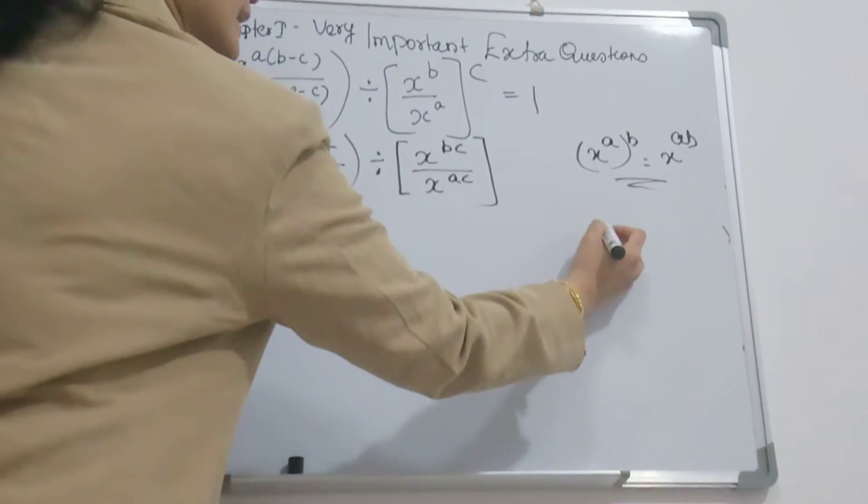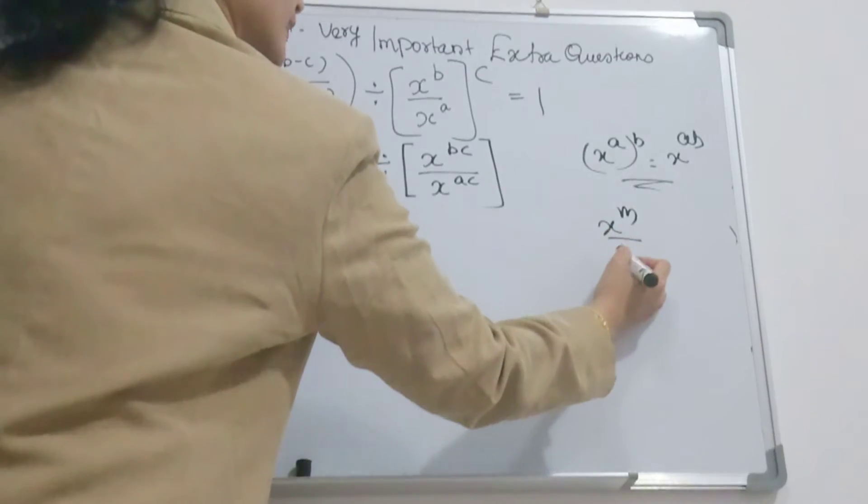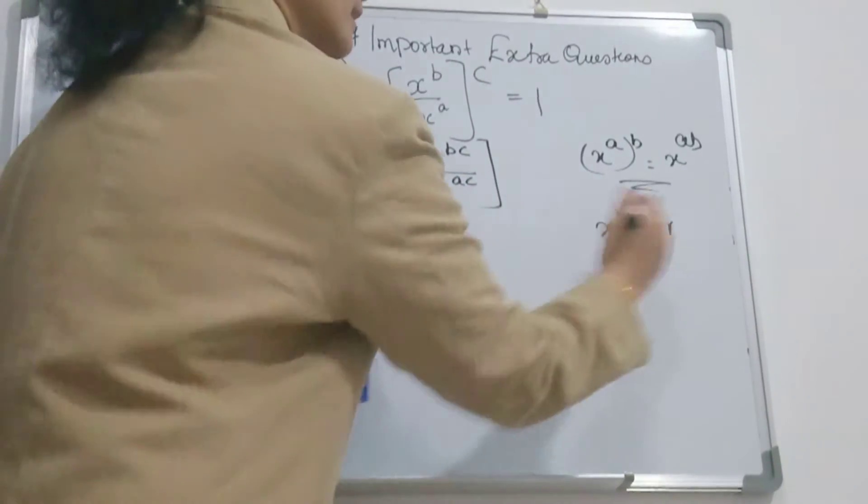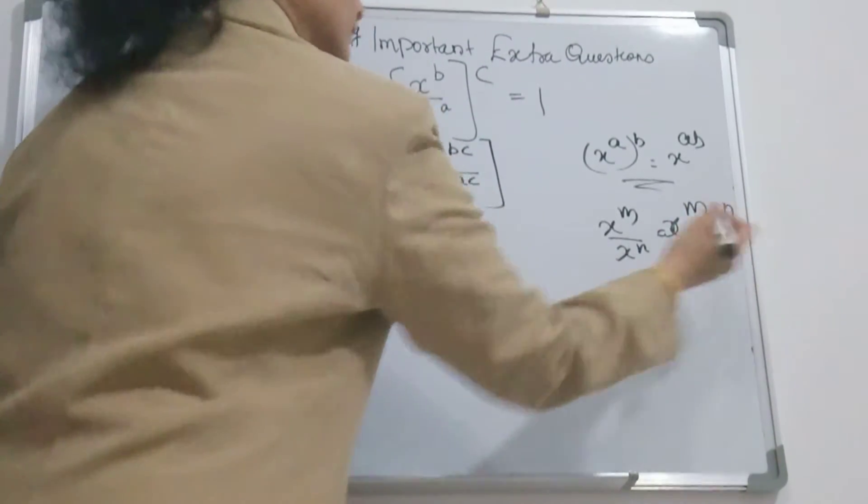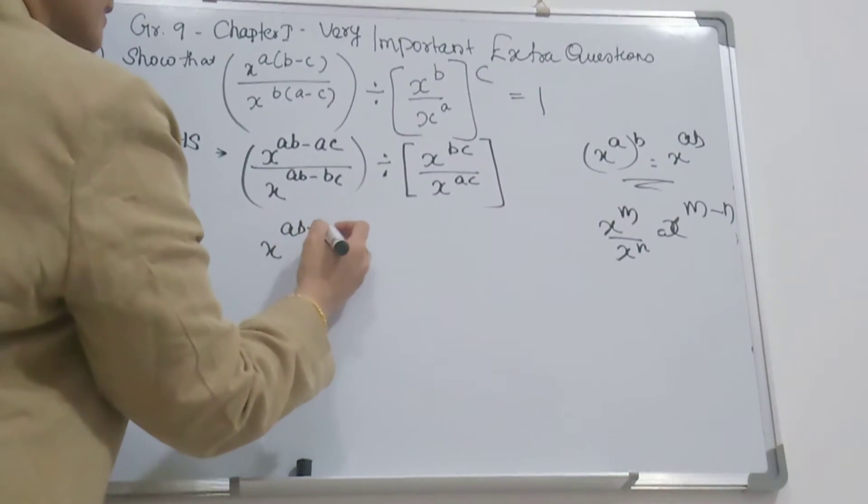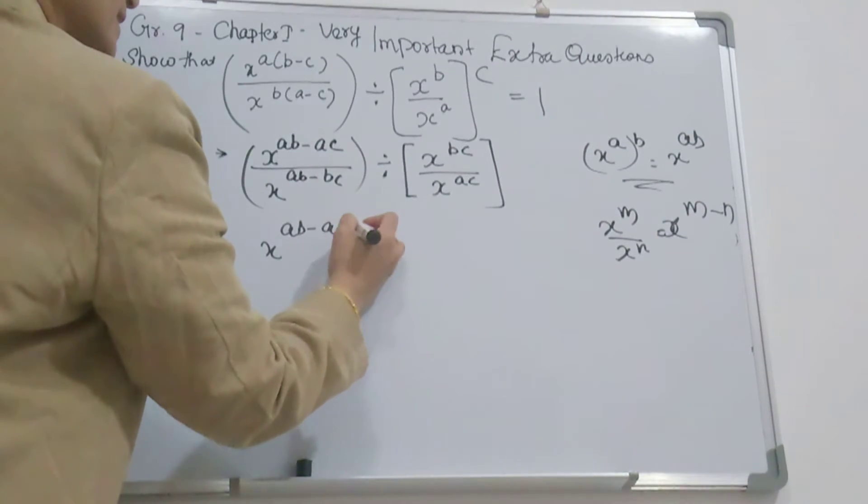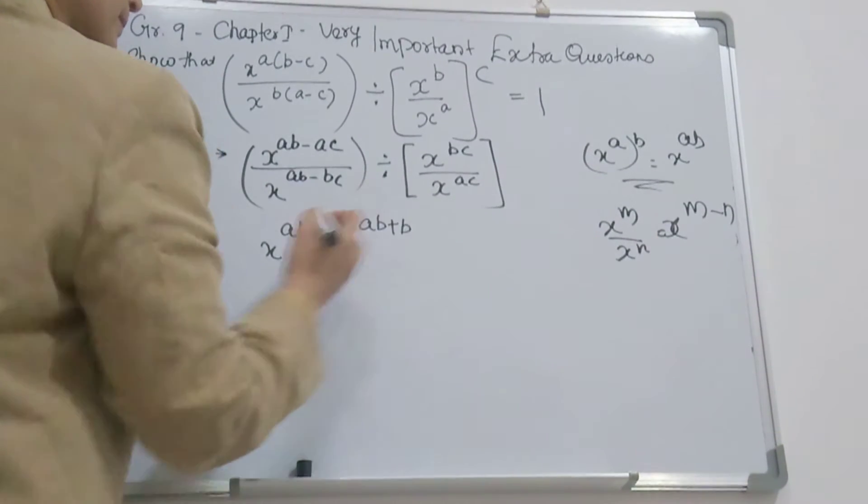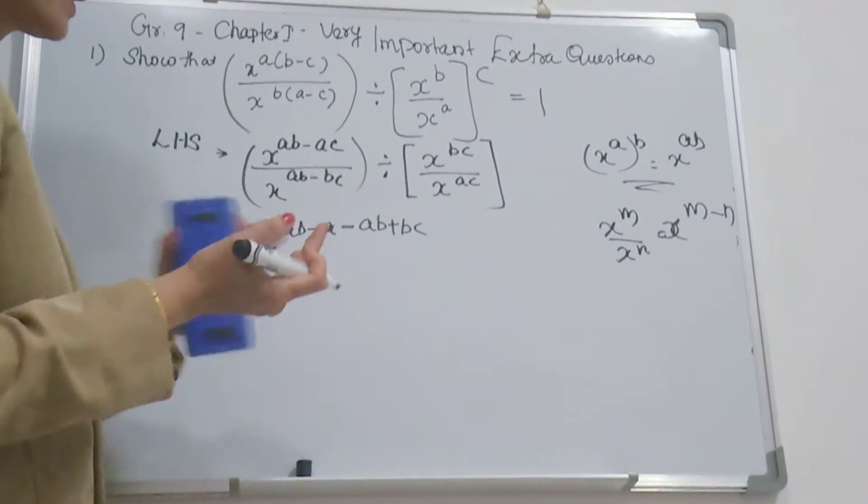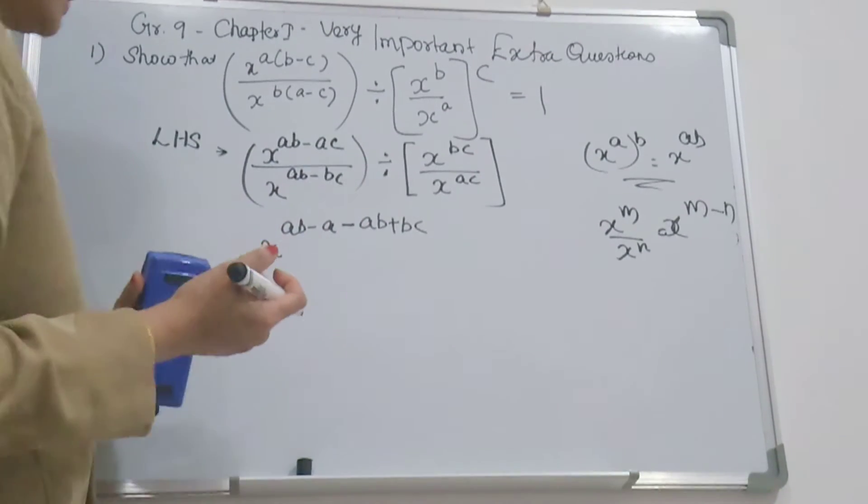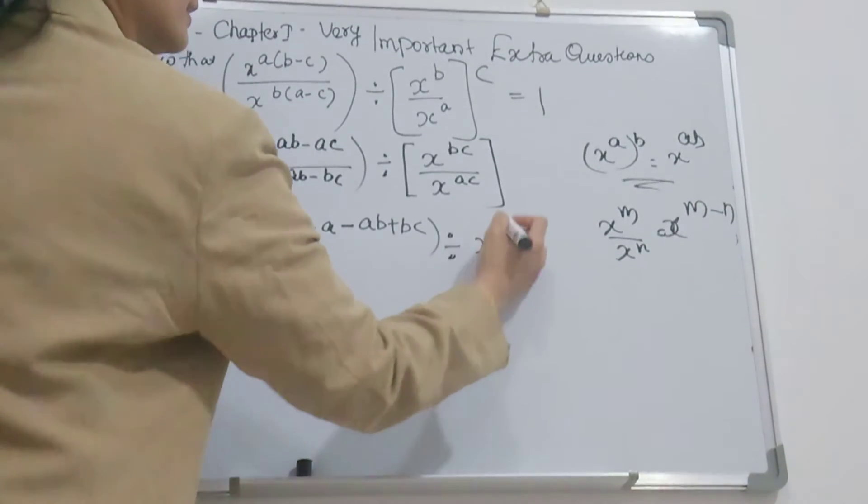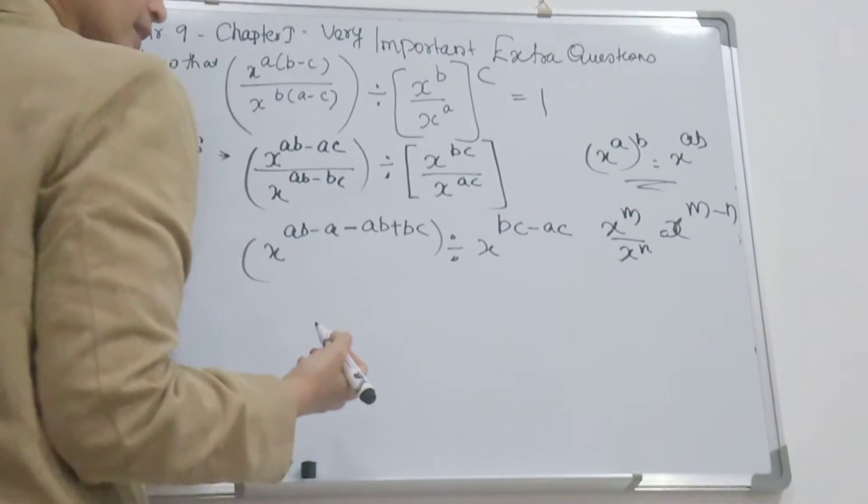Again, you use x^m divided by x^n equals x^(m-n). So x to the (ab - ac - ab + ac + bc). Why is it plus bc? Because minus of (ab - bc)—when you remove the bracket, this becomes minus ab plus bc—divided by x^(bc - ac).